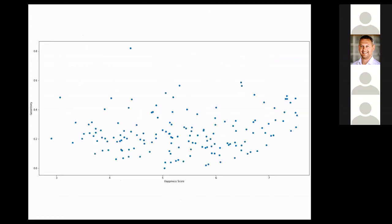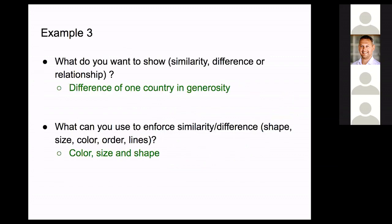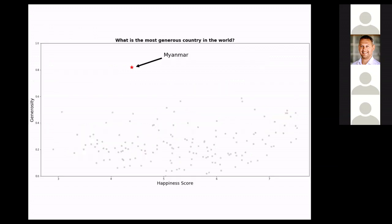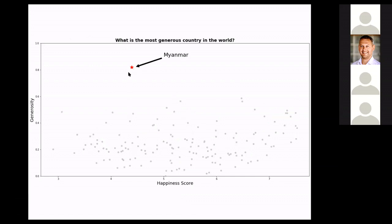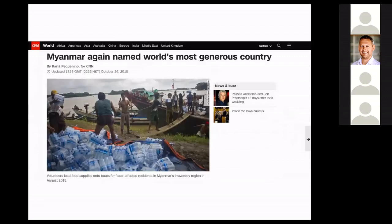The third example: I looked at happiness score and how generosity contributes to it. There is one point that clearly stands out from the others — I wanted to emphasize it. I used color, size, and shape, making the other points less contrasted, and labeled the outlier: Myanmar. The title asks: 'What is the most generous country in the world?' When I googled it, it's true — Myanmar has been one of the most generous countries for many years.